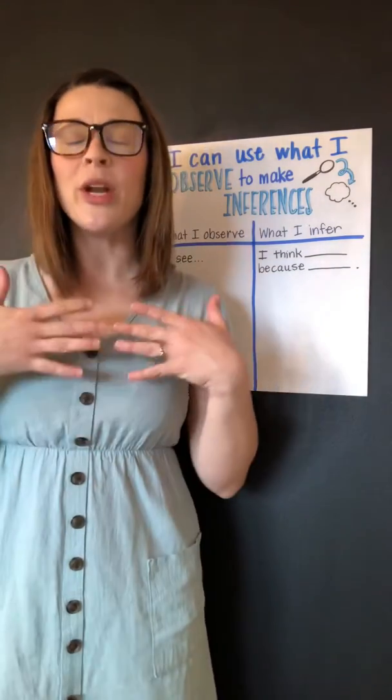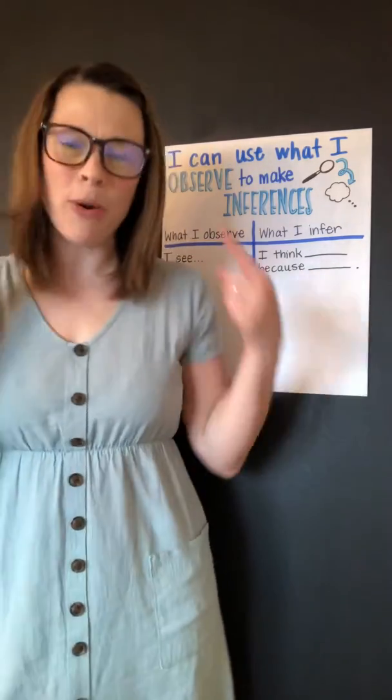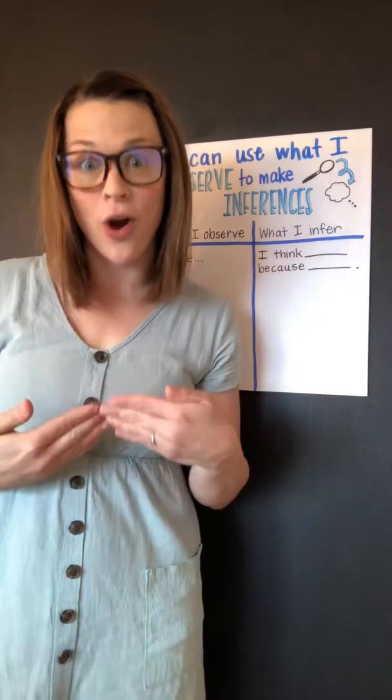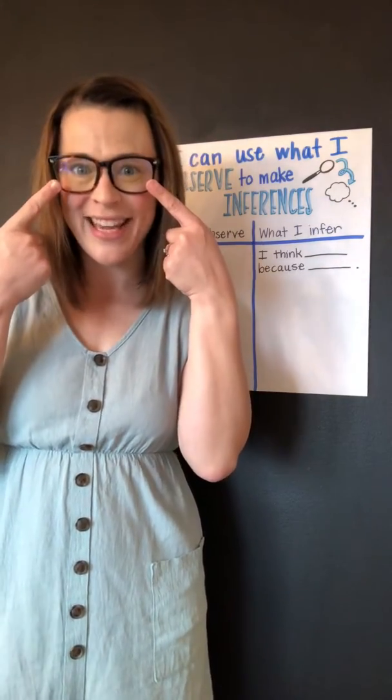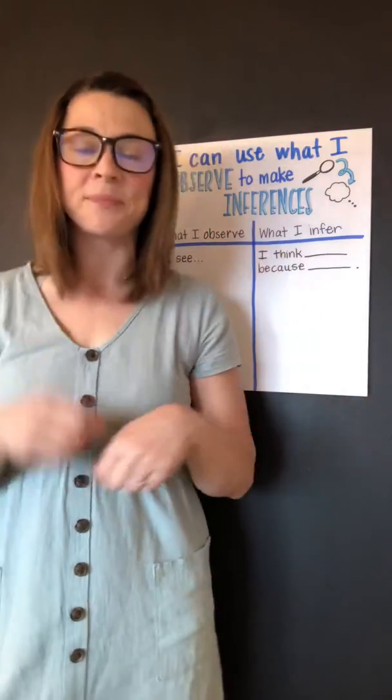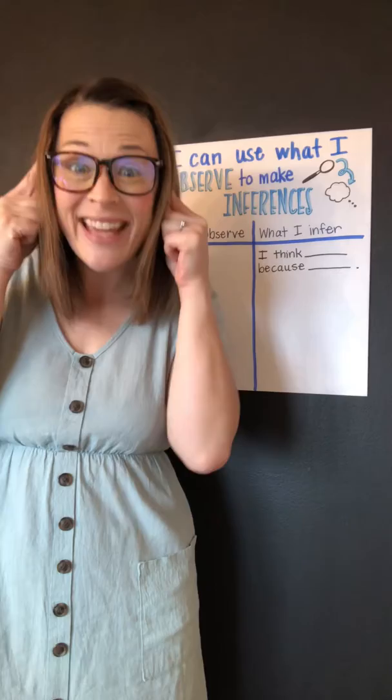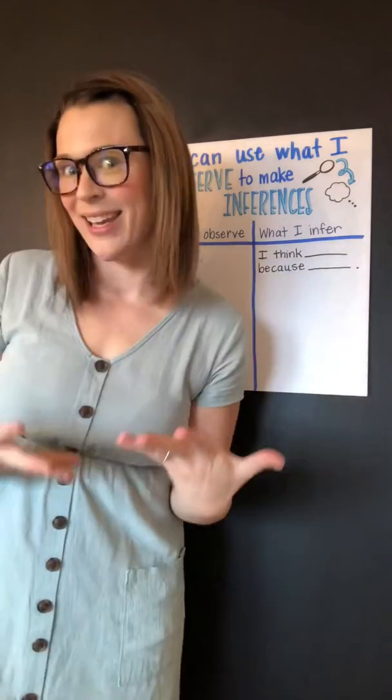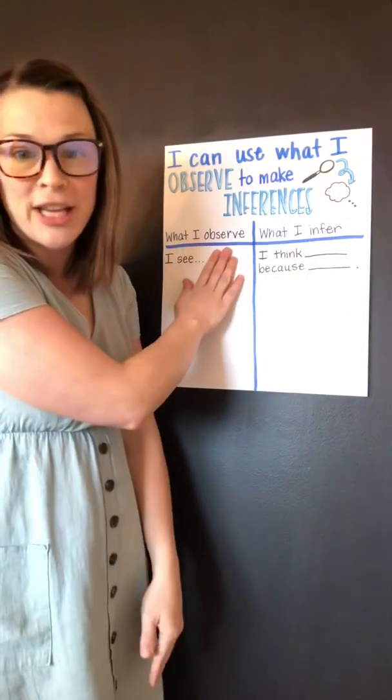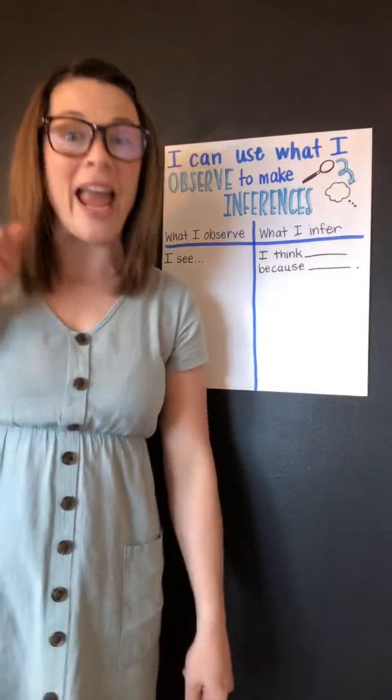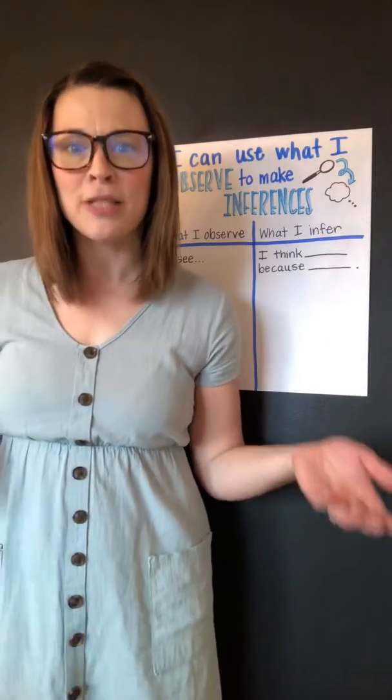So when you infer, you think about what the author's not telling you with their words, but what they want you to figure out on your own. And you do that by using what you observe, what you see or what the words you read, and pairing that with what you already know in your brain, your schema, to think about what the author's not telling you, what might be going on behind the scenes. So you can use what you know and what you observe to make inferences. And picture of the day helps us practice that.